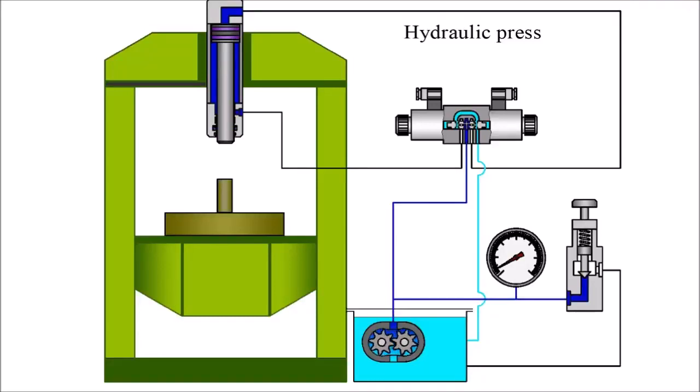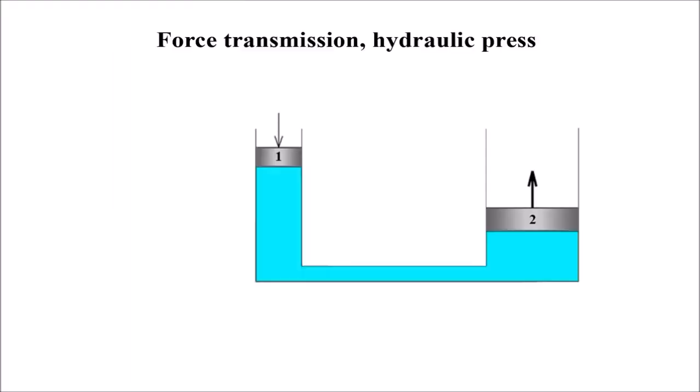A hydraulic press is a device using a hydraulic cylinder to generate a compressive force. The hydraulic press depends on Pascal's principle. This example will demonstrate how Pascal's principle may be used.